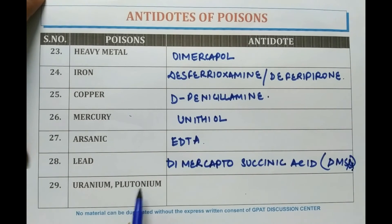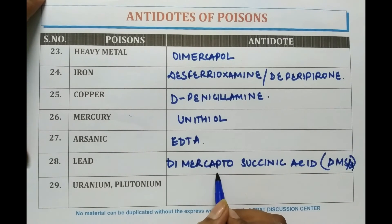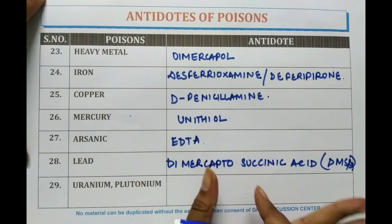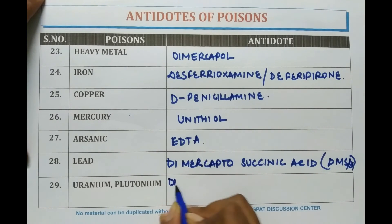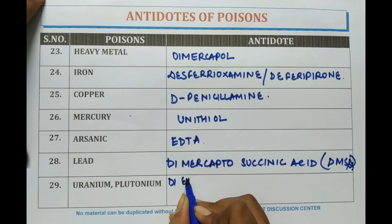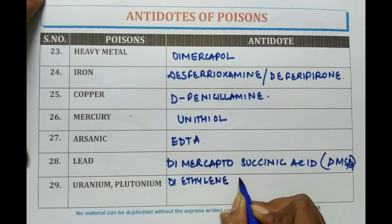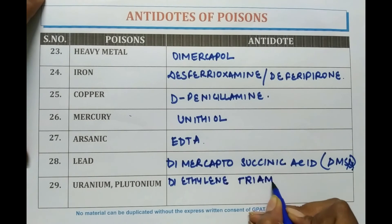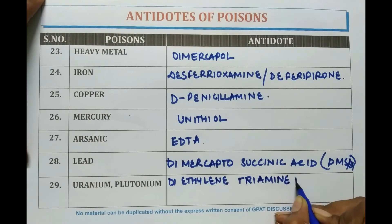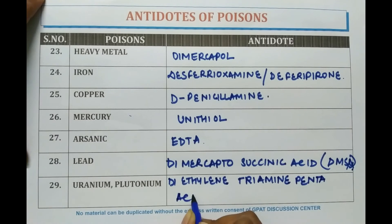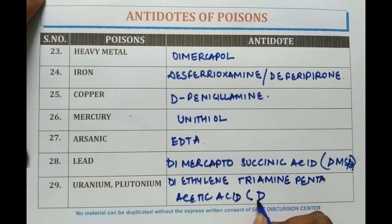In case of uranium or plutonium toxicity, diethylene triamine pentaacetic acid, abbreviated as DTPA, is given.